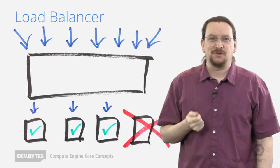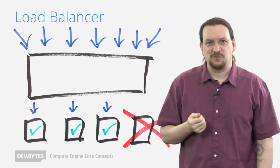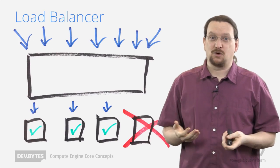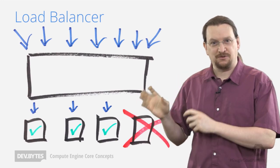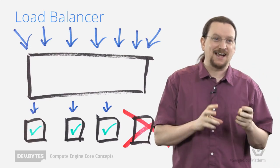We published a blog post recently with details of scaling the load balancer to one million queries per second without any advance warning or pre-warming. And it only hits virtual machines that are healthy. And you get to define for your application exactly what healthy means.